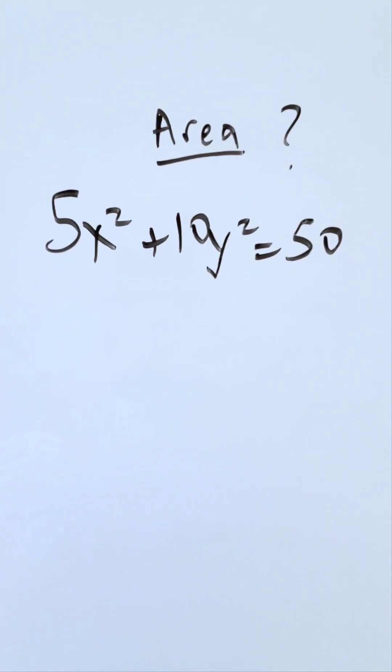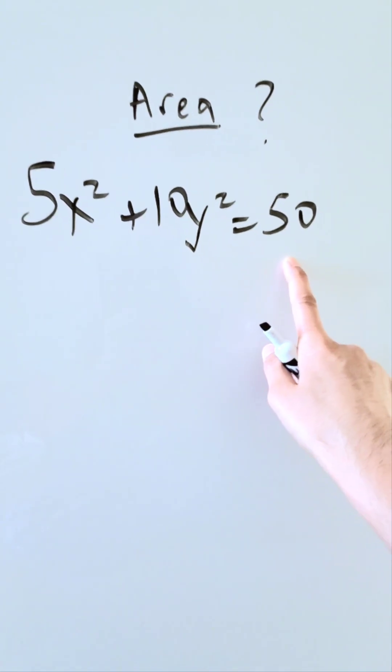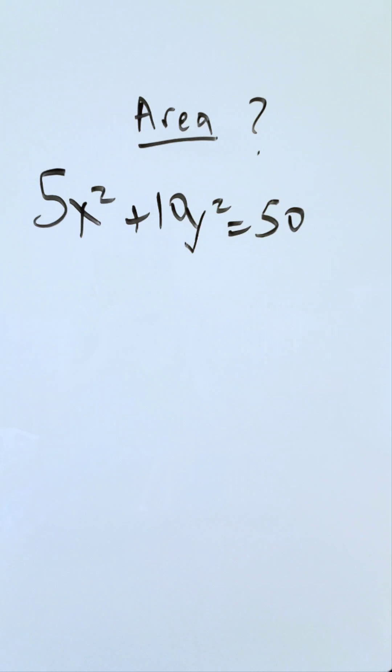Look at this equation. 5x squared plus 10y squared equals 50. What is the area involved with this? How can we solve it?